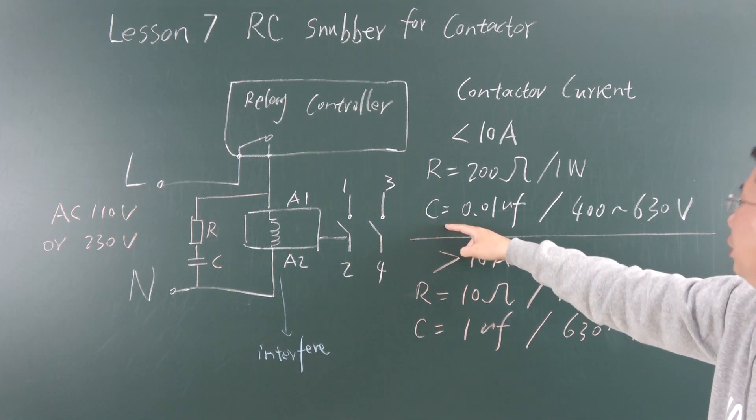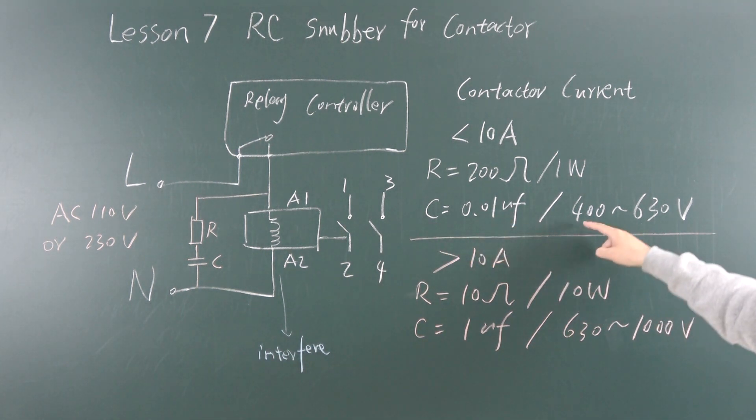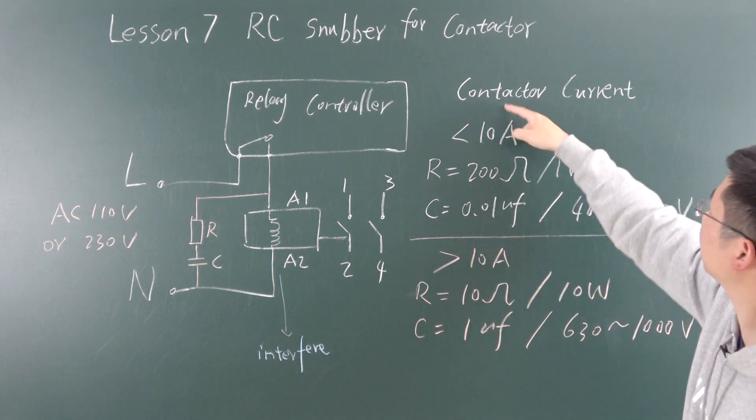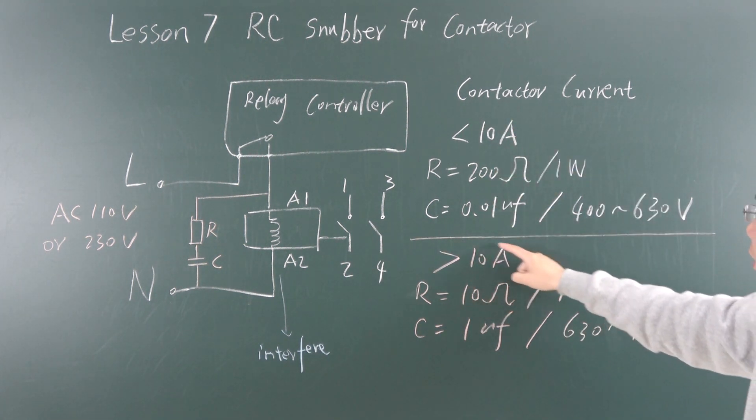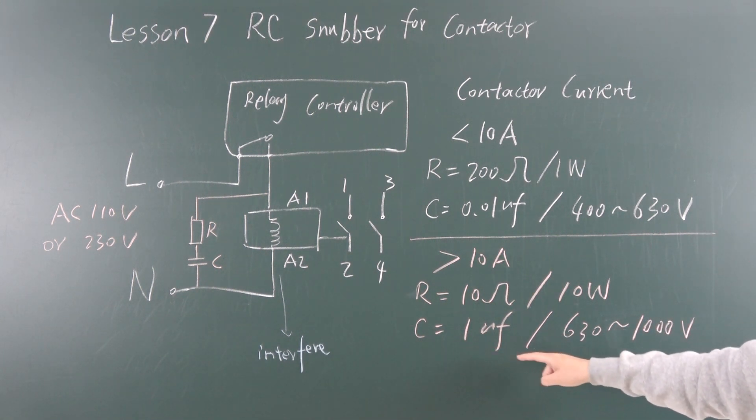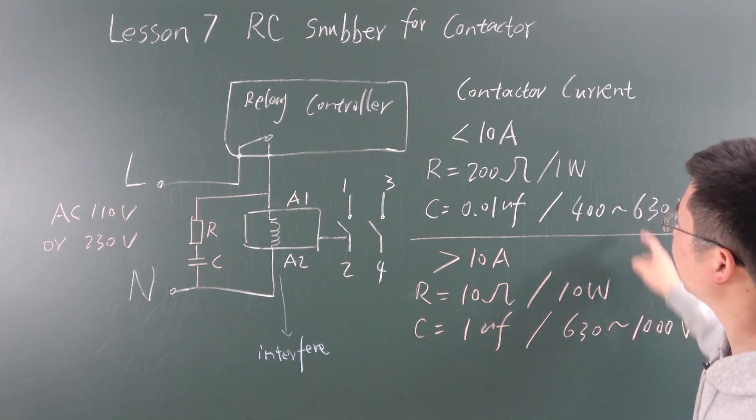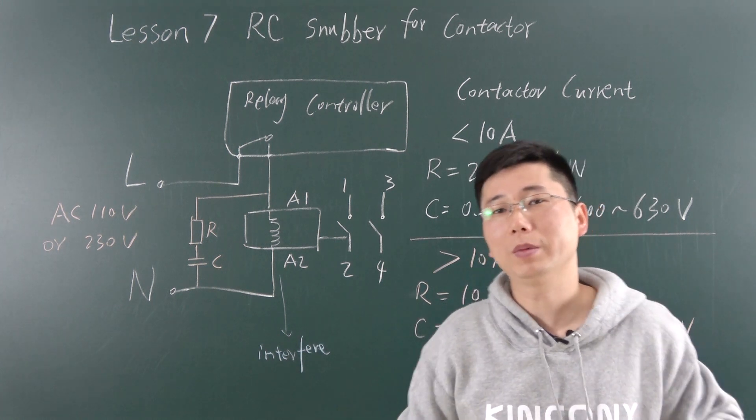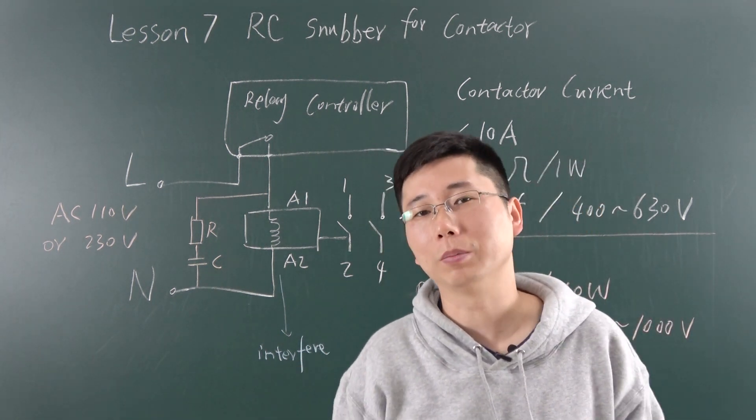If your contact is larger than 10 amperes, you can choose this resistance value and power, and this capacitance and voltage. Now we will make an experiment so you can understand deeply.